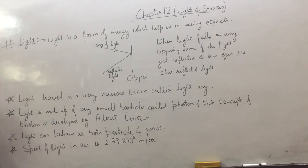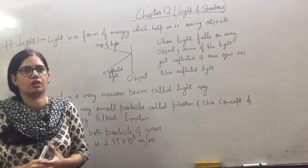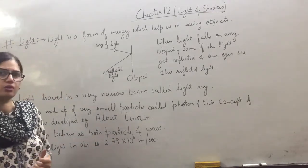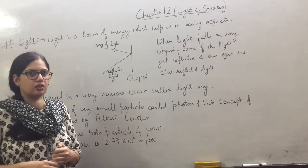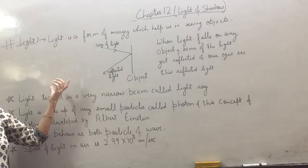Light is a form of energy which helps us in seeing. That means light helps you see objects in the room. Suppose this room's light is off, can I show you things? No, we are not able to see anything. So light helps us see things.